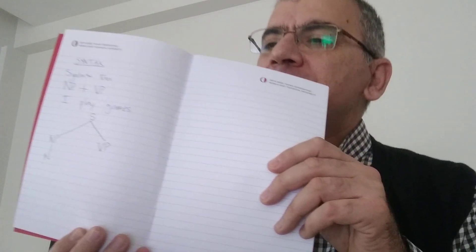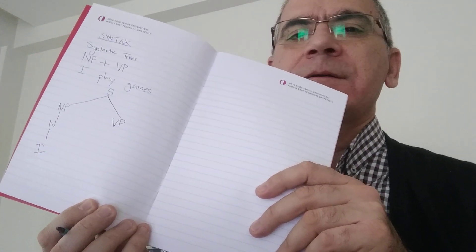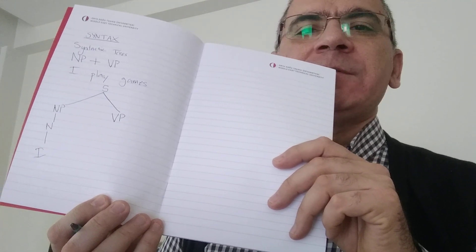Noun phrase consists of the noun part, and the verb phrase consists of the verb part of the sentence. The verb phrase begins with the verb. And until the verb, we have the noun phrase. In the noun phrase part, we make a division and say it's a noun. In this sentence we have only one noun, which is a pronoun — that's I.